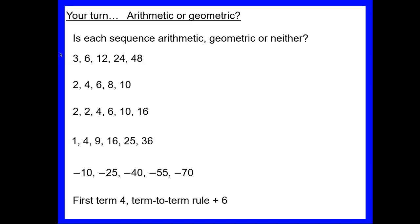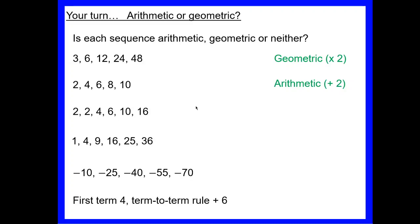Looking at the first one: 3, 6, 12, 24, 48. From 3 to 6 is adding 3, then adding 6, then adding 12 — different amounts each time, so not arithmetic. Checking geometric: 3 × 2 = 6, × 2 = 12, × 2 = 24, × 2 = 48. Yes, that's geometric — times by 2 each time. The next sequence: 2, 4, 6, 8, 10 — adding 2 each time, so that's arithmetic.